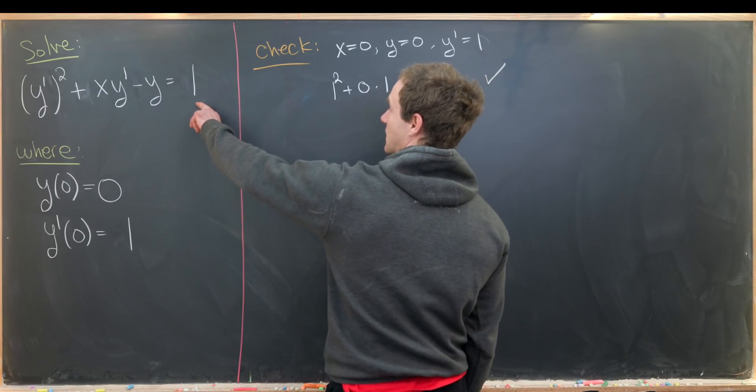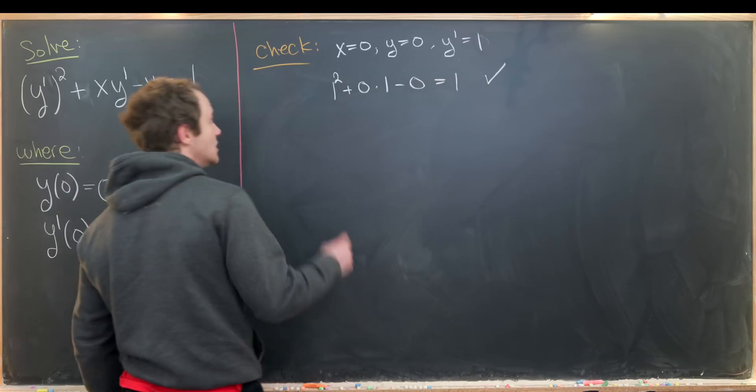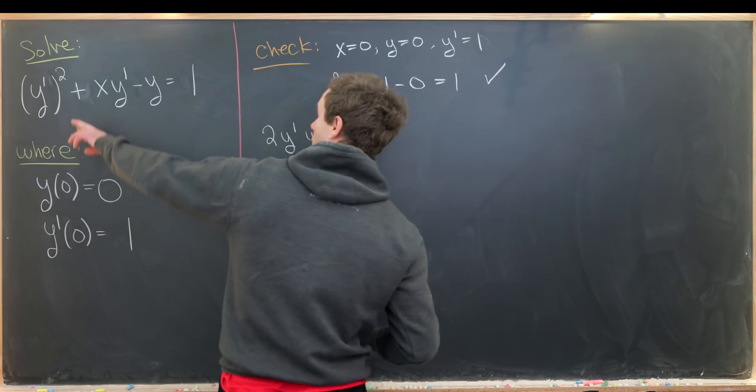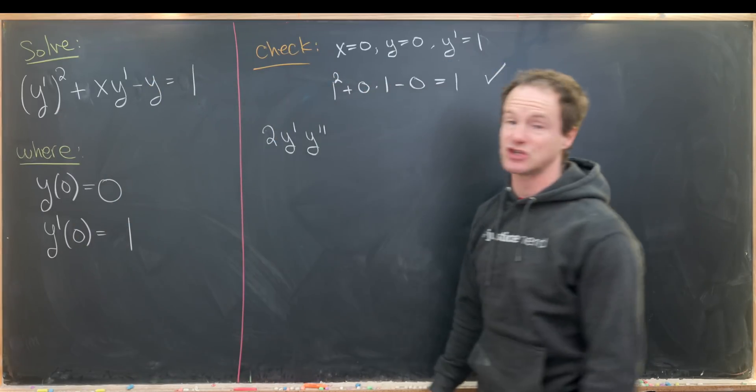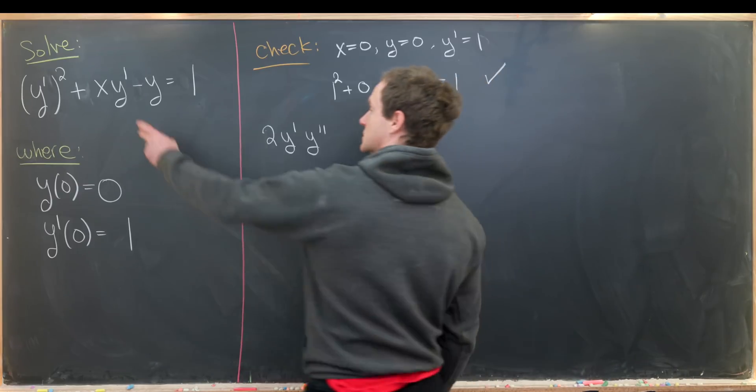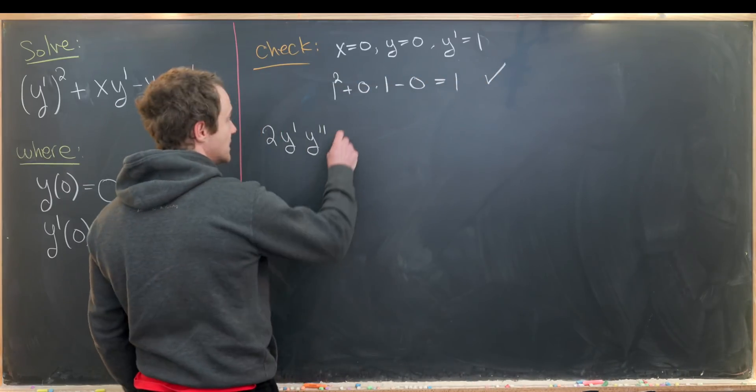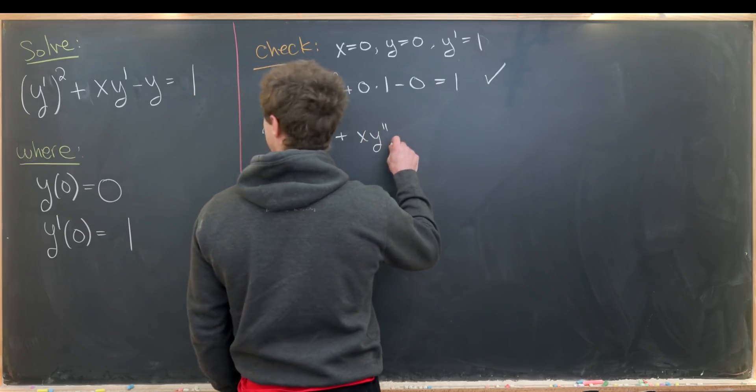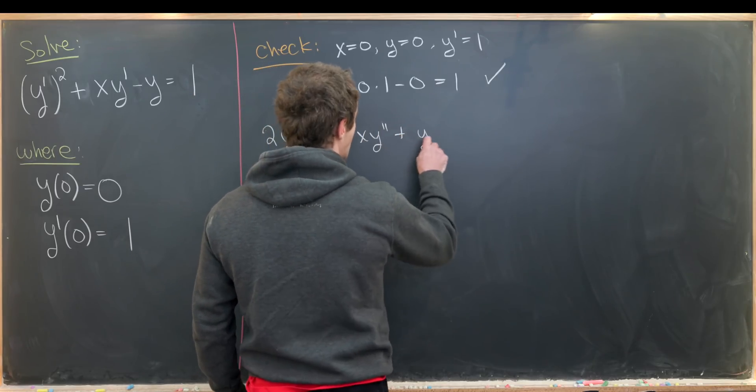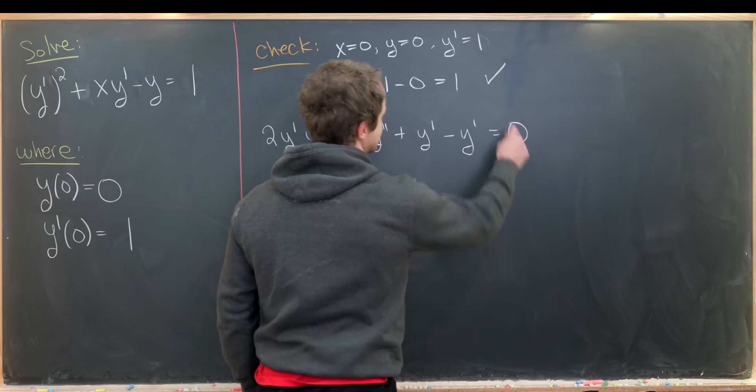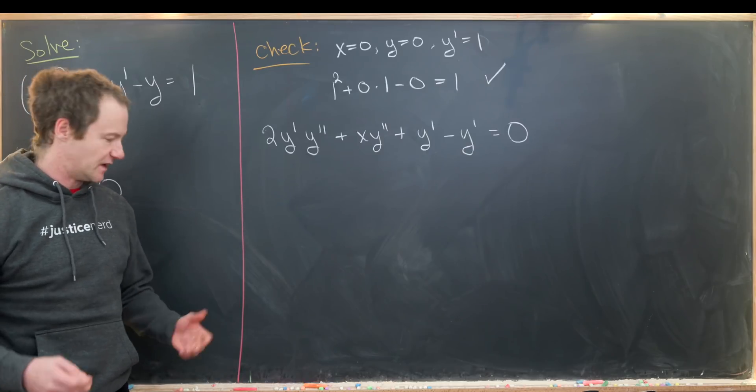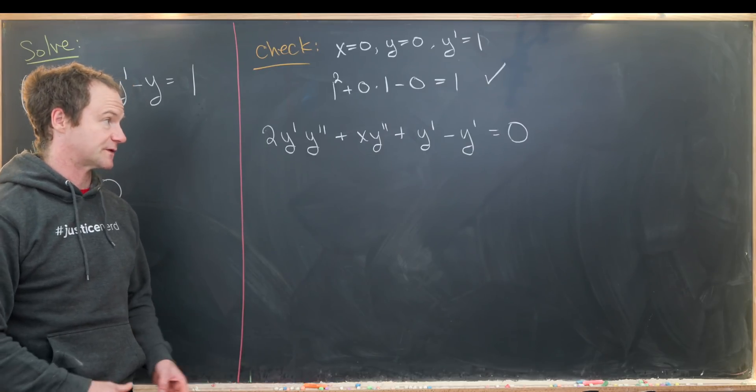Taking the derivative of this entire equation will give us 2 times y' times y'' for this term from the chain rule, and then we'll use the product rule here to have plus xy'' plus y' minus y' equals 0. So that's what we get after taking the derivative of this whole thing using standard rules for derivatives.